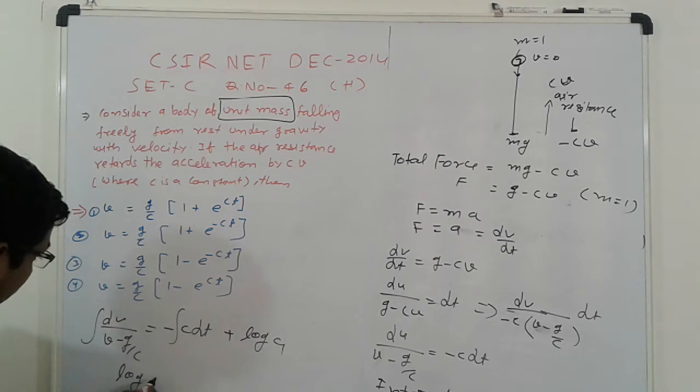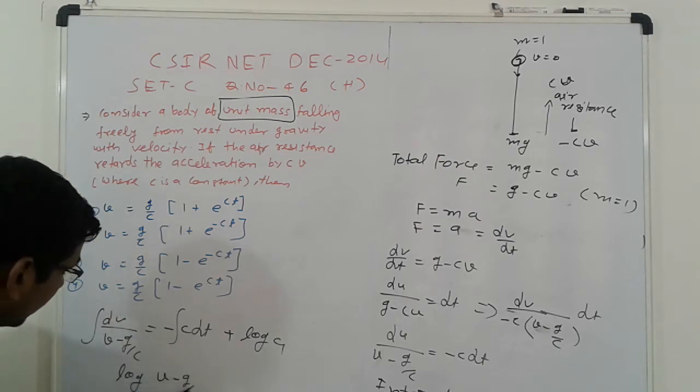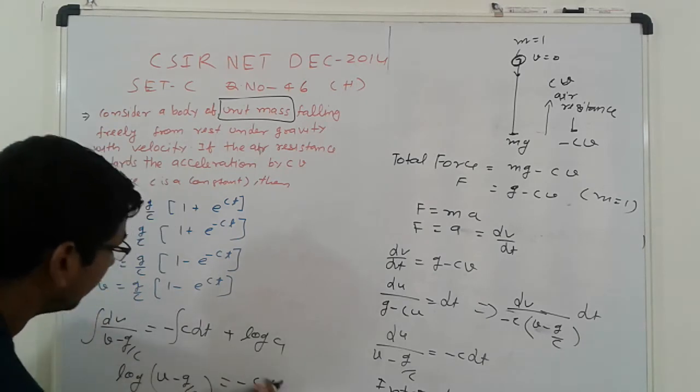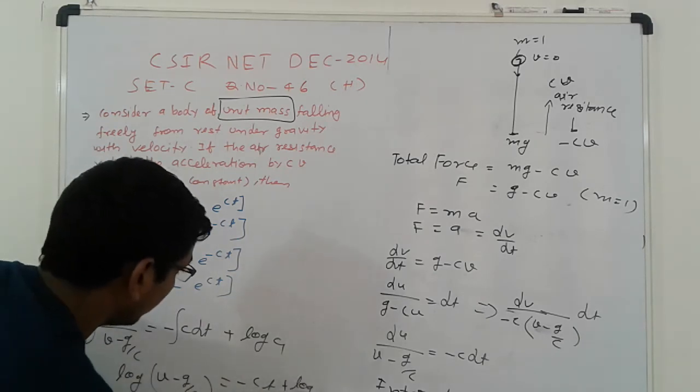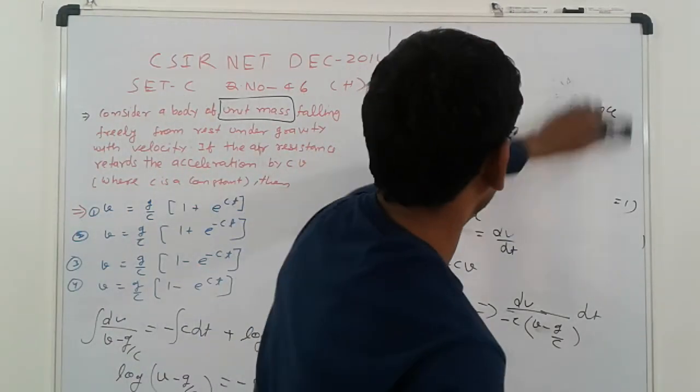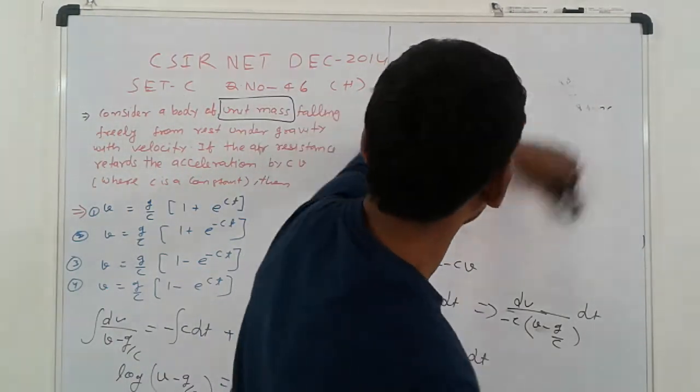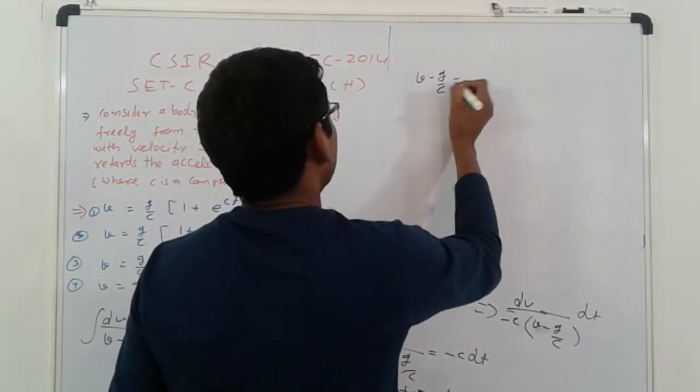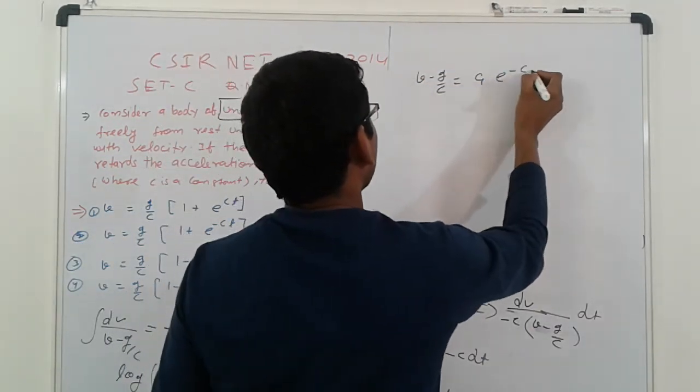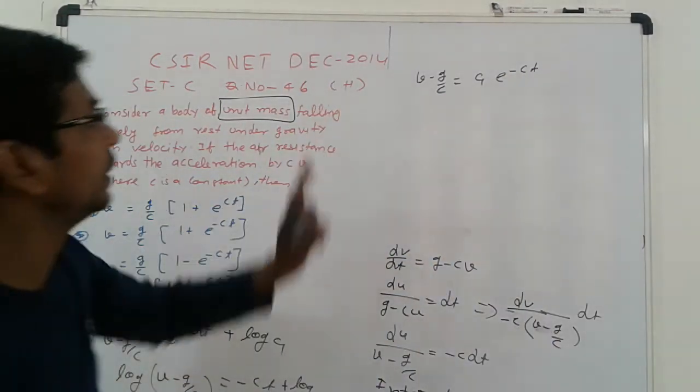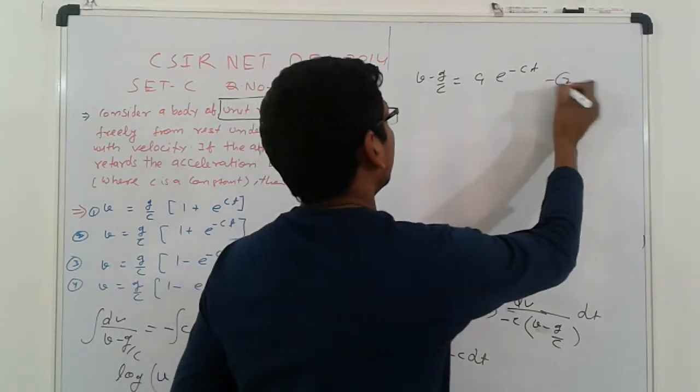So the left hand side is log of V minus g upon C, minus C, CT, plus log of C1. So V upon g minus C equal to, how much? So V minus g upon C is equal to C1 e raised to minus Ct. That is here, simplifier, that is, we get this. So that is, suppose, equation number 2.